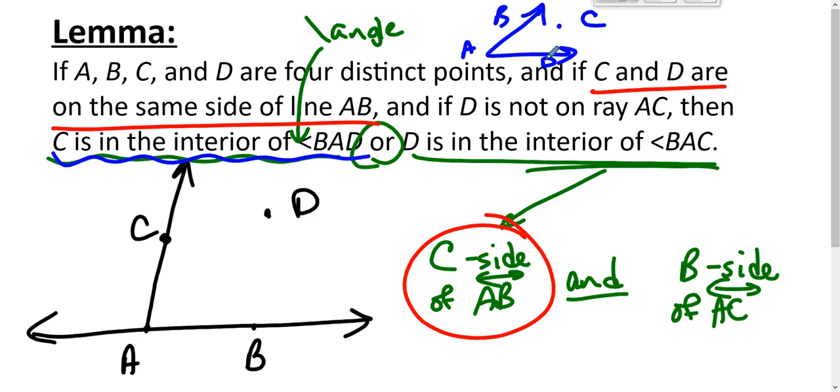If C were in the interior of BAD, then D could not be on the B side of line AC. Then D could not be on the B side of line AC.